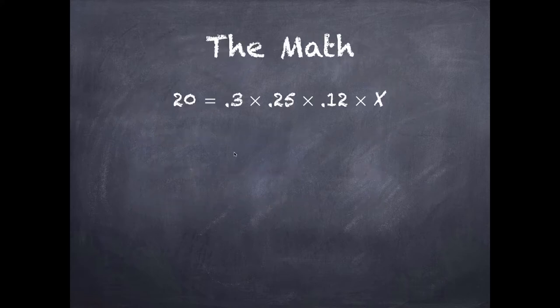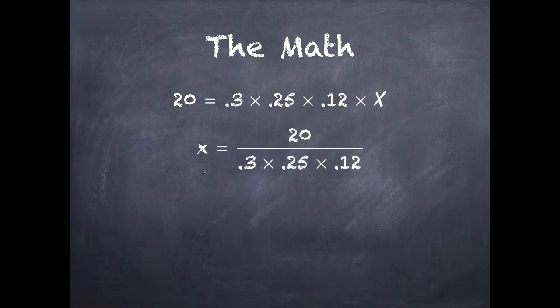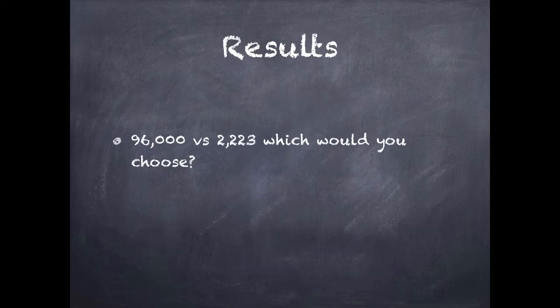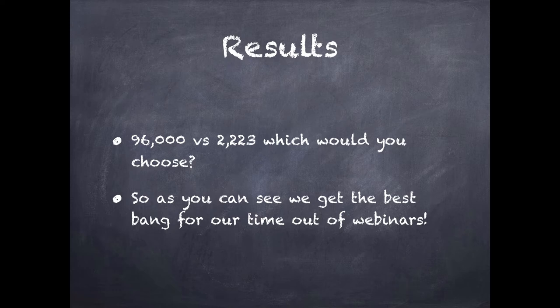The math here: we've got our 20 items we want to sell, our conversion percentages, and dividing 20 by those percentages brings us to a result of 2,223. That means we need to get 2,223 people to view our registration page to meet the goal of 20 sales. So — 96,000 versus 2,223 — which one would you choose? As you can see, the best bang for our buck is doing webinars. This is where statistics and analytics come in really handy, to make sure you're focusing your attention where you'll get the best results.